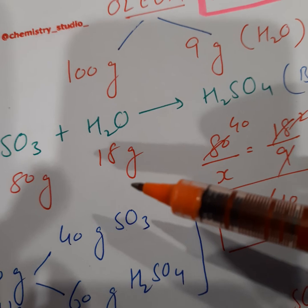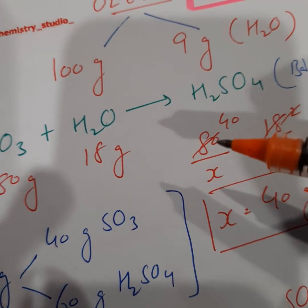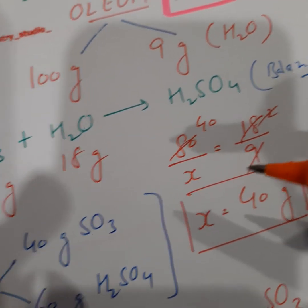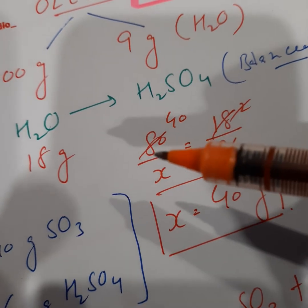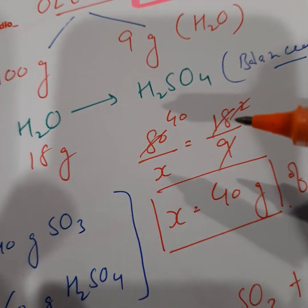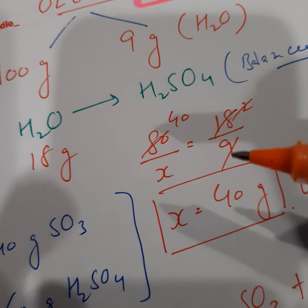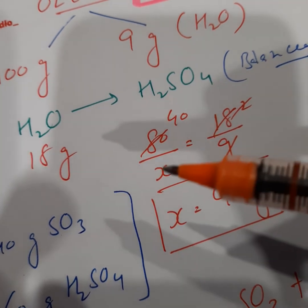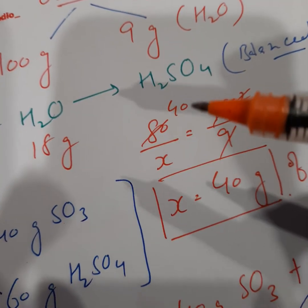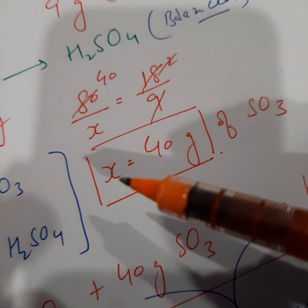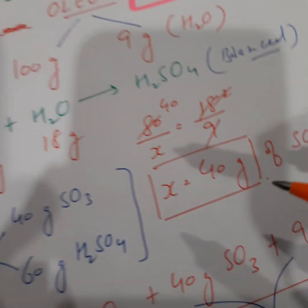Now from here we can conclude that 80 upon X is equal to 18 by 9. What does this mean? 80 grams of sulfur trioxide reacts with 18 grams of water, so 9 grams of water would require how much amount of sulfur trioxide.